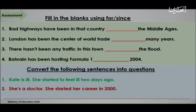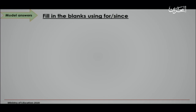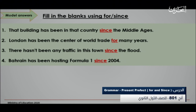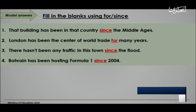All right, let's check the model answers. For the first four sentences, the answers are: That building has been in that country since the Middle Ages. London has been the center of world trade for many years. There hasn't been any traffic in this town since the flood. Bahrain has been hosting Formula 1 since 2004.